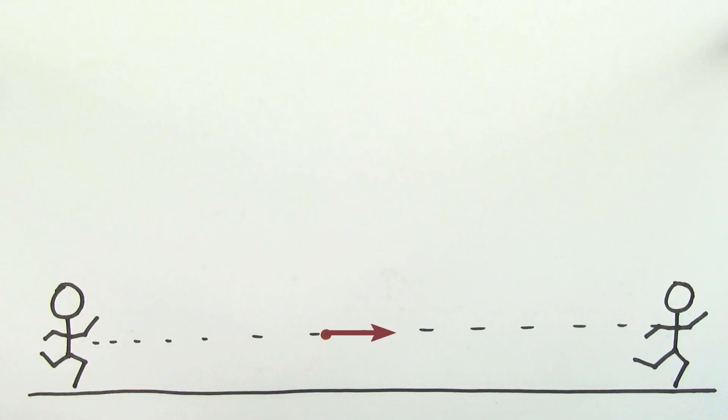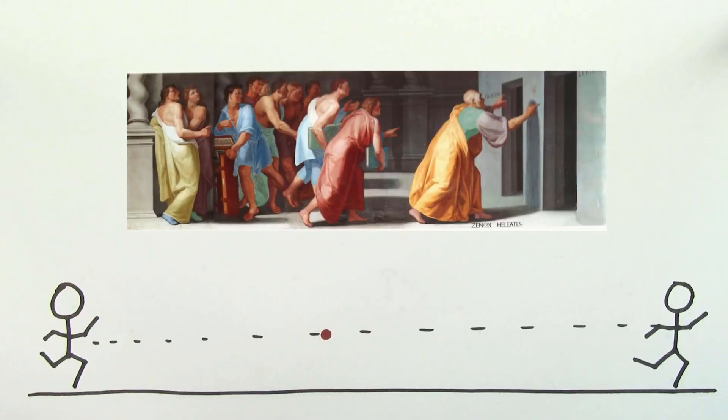In fact, since defining motion at a particular point in time seemed impossible, it made some ancient Greeks question whether motion had any meaning at all. They wondered whether motion was just an illusion.